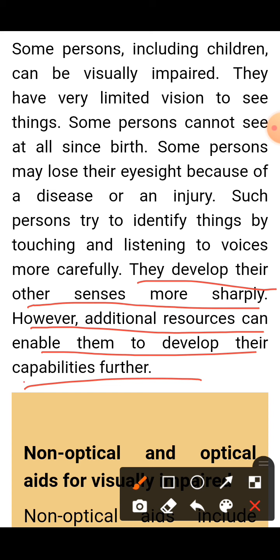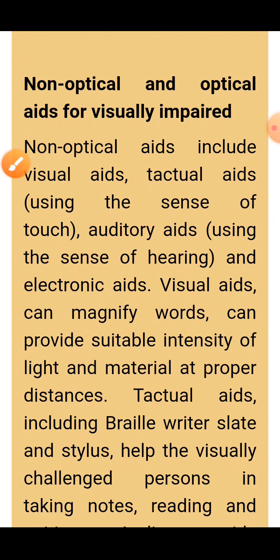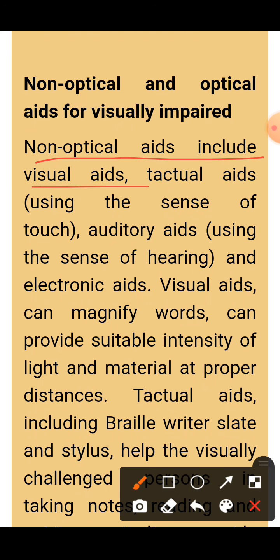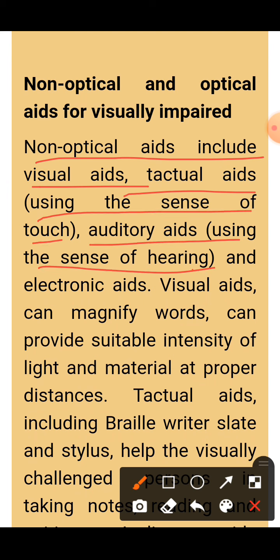There are equipments available to help visually impaired persons develop their capabilities and work easily. For a blind person, there are non-optical aids and optical aids. Optical means related to seeing, and non-optical means those which do not use optical things. Non-optical aids include visual aids, textual aids using the sense of touch, auditory aids using the sense of hearing, and electronic aids.